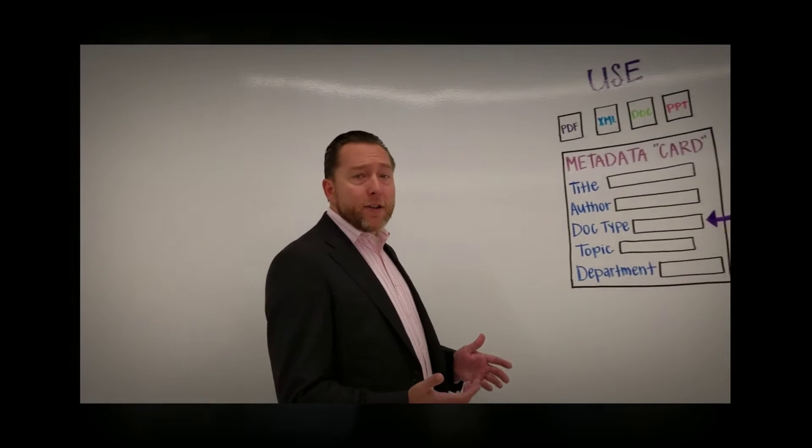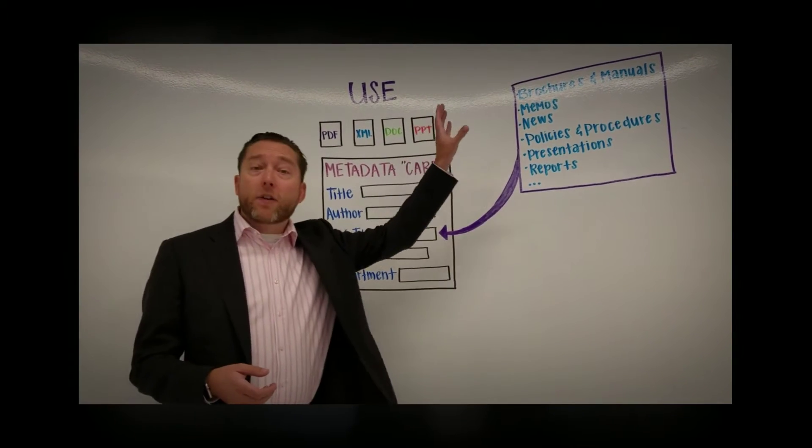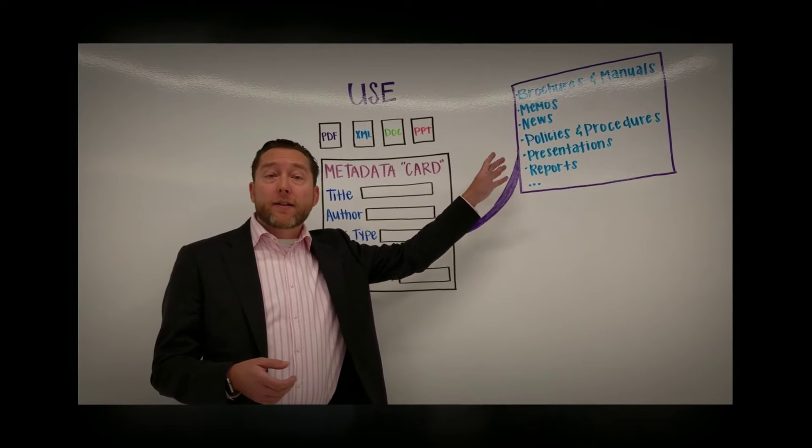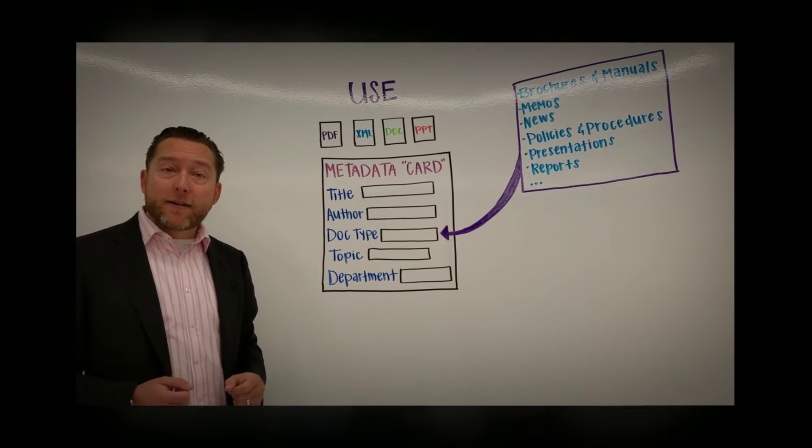You can consider taxonomy a lot like a card cataloging library. We basically have controlled lists or hierarchies that populate each of these fields in order to be able to consistently describe that content.